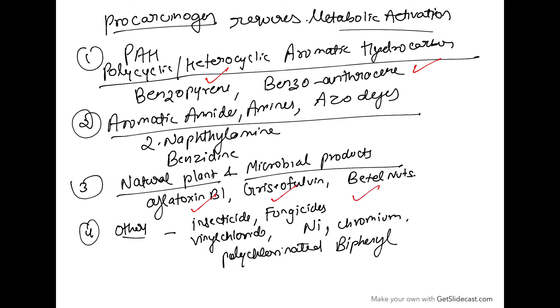There are also others like insecticides, pesticides, fungicides, vinyl chloride, nickel, chromium, and polychlorinated biphenyls. So these are some of the examples of pro-carcinogens.